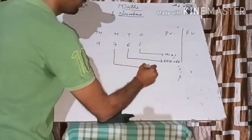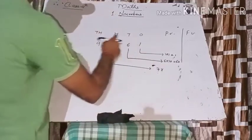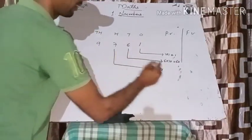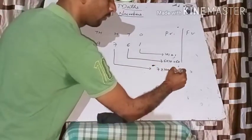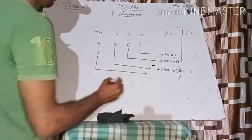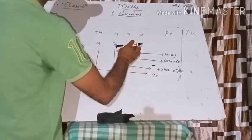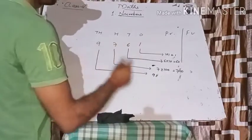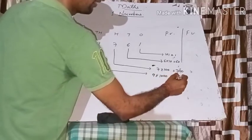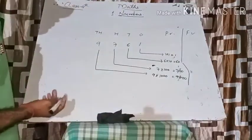Now, what is the place value of 7? The digit is 7 and the position is hundreds, so 7 × 100 = 700. And what is the place value of 9? The digit is 9 and the position is thousands, so 9 × 1000 = 9000.